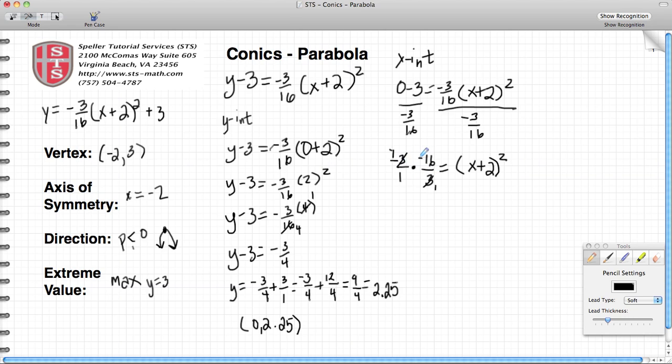When you multiply fractions, you multiply across your numerators and across your denominators. So negative 1 times negative 16 gives me a positive 16, and then I'm going to rewrite what's off to the right-hand side of my equal sign.